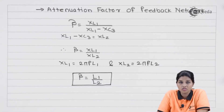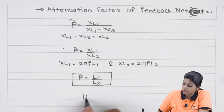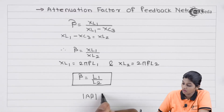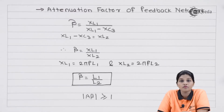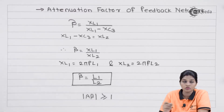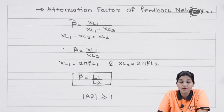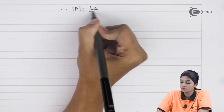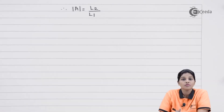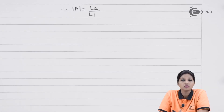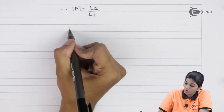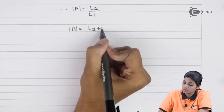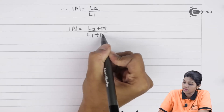To have sustained oscillation, according to the second Barkhausen criteria, the gain of the op-amp is required to satisfy |Aβ| ≥ 1. Since β = L1/L2, the gain of the amplifier is given by |A| = L2 / L1. When we consider the mutual inductance between the coils, the same formula can be written as: |A| = (L2 + M) / (L1 + M).